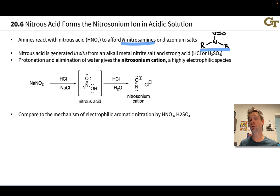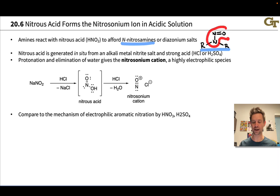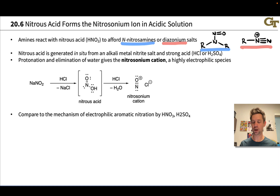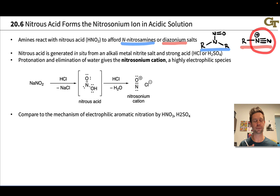For secondary amines, the products are known as nitrosamines or N-nitroso compounds. The NO double bond is known as the nitroso group, so this is an N-nitroso or nitrosamine product. When the amine is primary, the product is known as a diazonium salt — a diazonium cation. The diazonium group is N2 with a positive charge, and it comes along with a counter anion depending on the acid used to generate the nitrous acid.